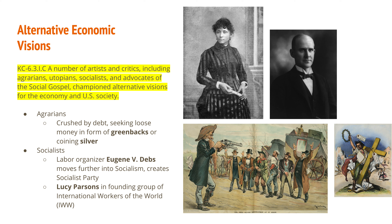For agrarians — people who were farmers — at the time they were really crushed by debt. The low prices on their crops kept them from being able to get out of debt. For that reason, they're looking for a loose monetary policy, meaning more money in the money supply, driving up inflation — either in the form of greenbacks or coining silver. Having more money in the money supply would allow them to repay their debts a lot easier and get out of the economic situation they were in.